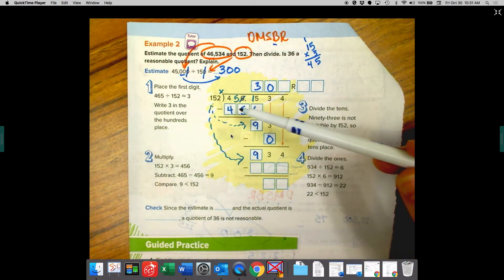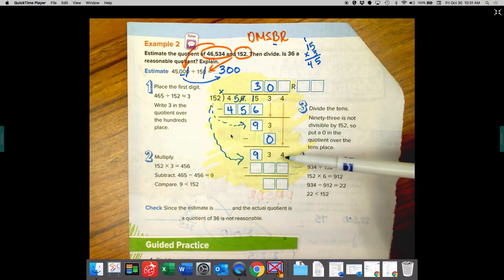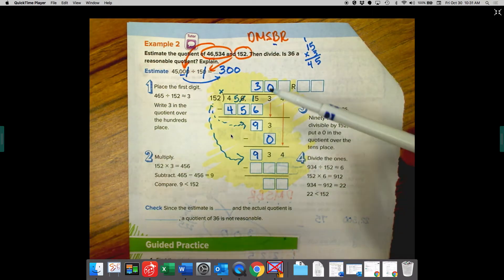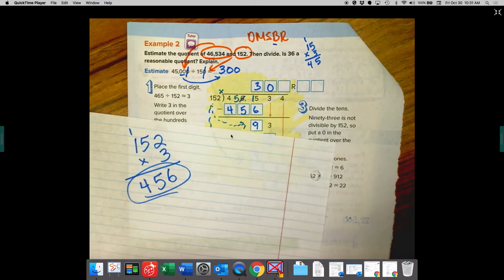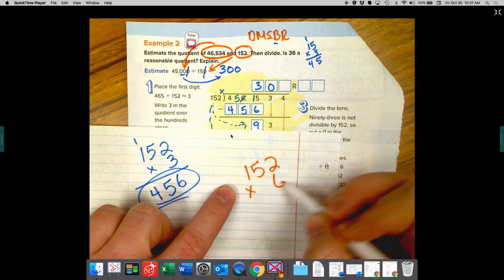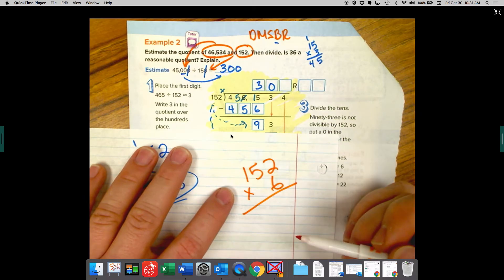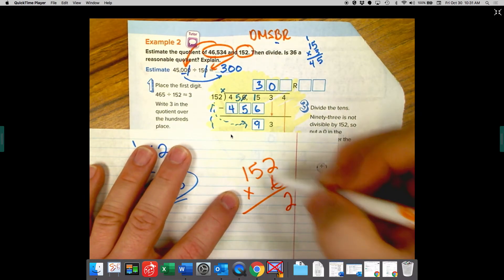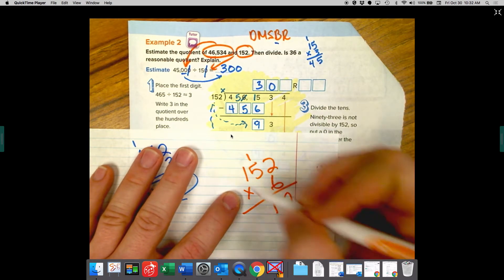This is going to kind of require some guess and check work. So let's see. So we know if we did it three times, it gets us to here, which is 456. We have to get almost like double that. So let's try doubling the three to six. So let's try. Let's grab our scrap paper. 152 times six. Okay. And we might have to change and go up or go down. We'll have to see. Six times two is 12. Carry the one. Six times five is 30. Plus one more is 31.